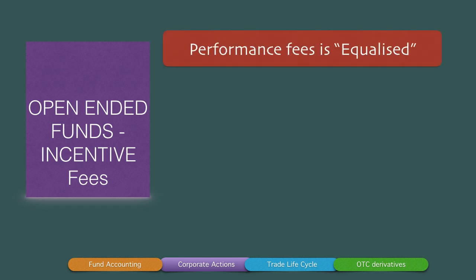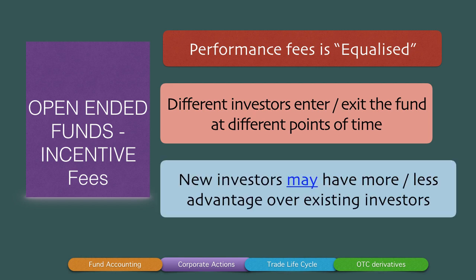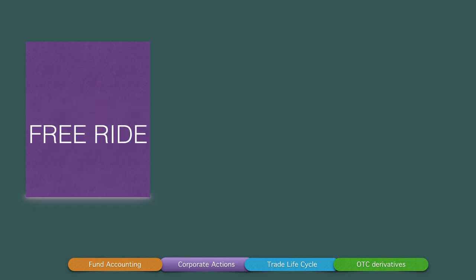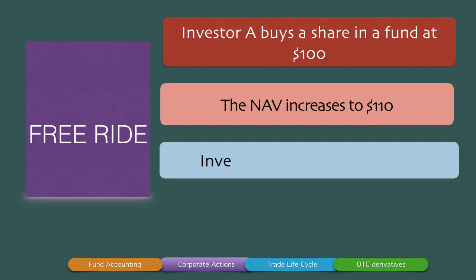Open-ended funds charge incentive fees where the performance fees is equalized. In an open-ended fund, investors enter and exit at different points of time, meaning different investors may or may not have an advantage over existing investors. For example, consider a free ride scenario: investor A buys a share in a fund at $100 and the NAV increases to $110. Investor A pays the incentive fee — it's locked in and paid.